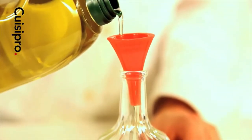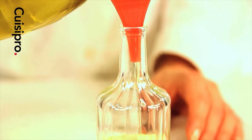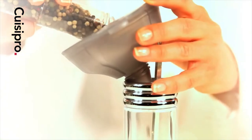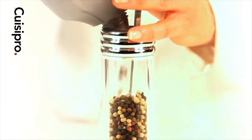The small funnel is designed for narrow-necked bottles such as oil cruets. The medium funnel has a unique angled spout for hard to fill items such as pepper mills.